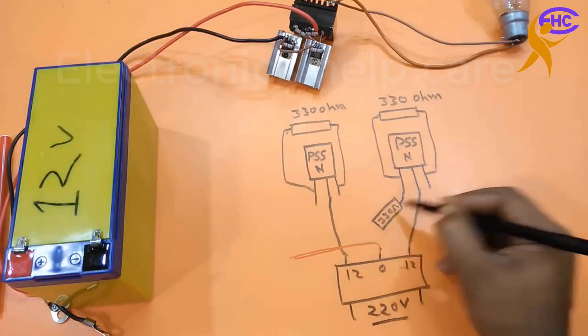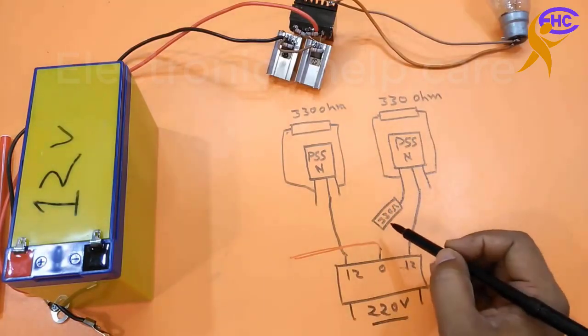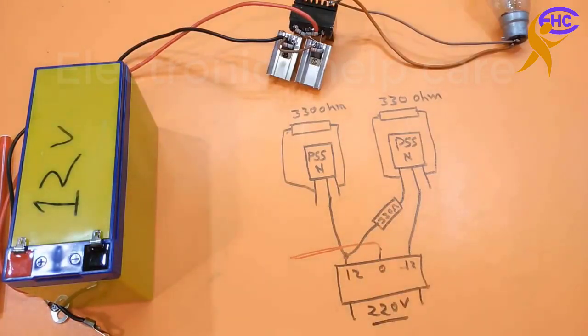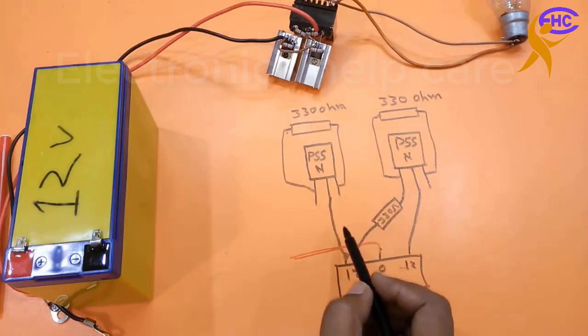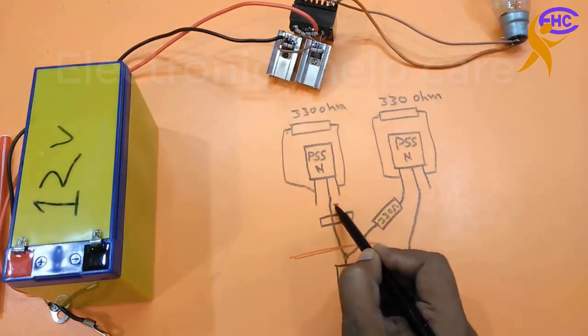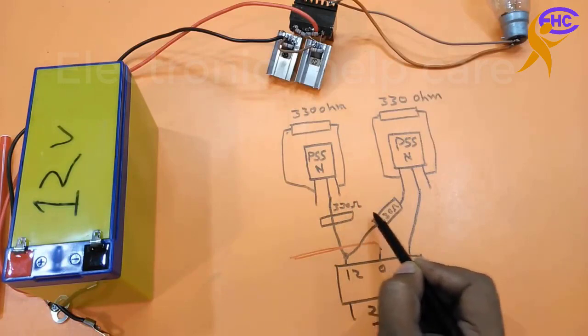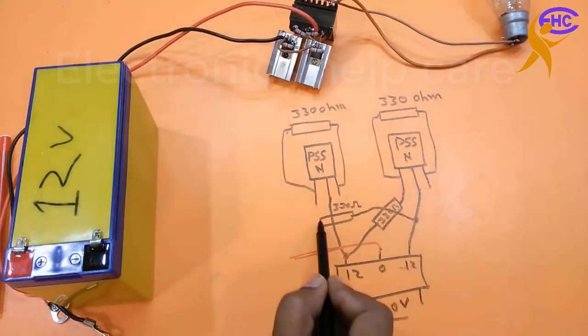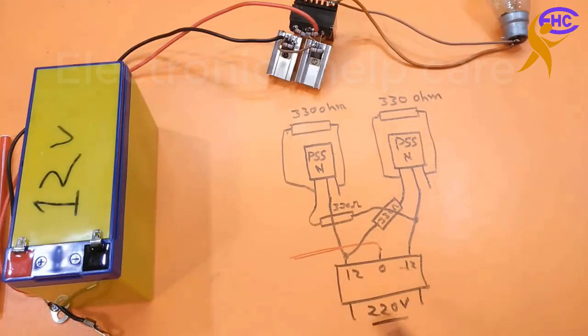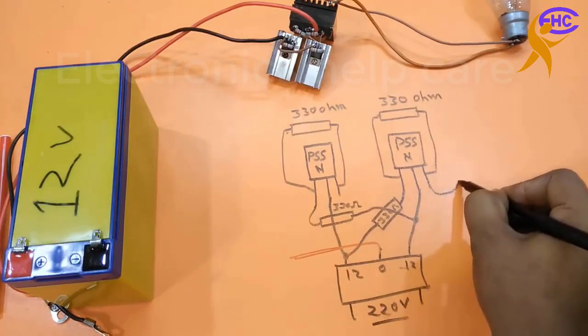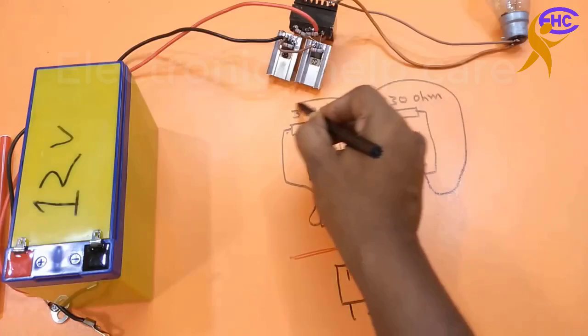This resistor also goes to the gate. This is the same 300 ohm resistor, goes to gate leg to drain. Here also will be a 300 ohm resistor, drain to gate. This transistor gate and that transistor drain, same both are the same.